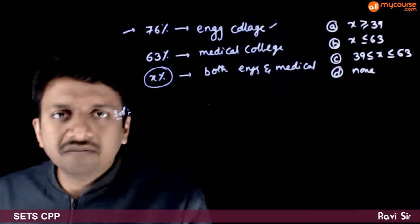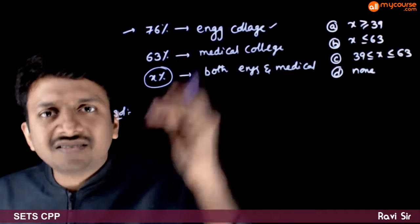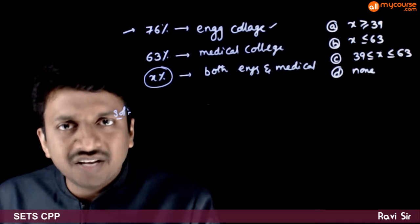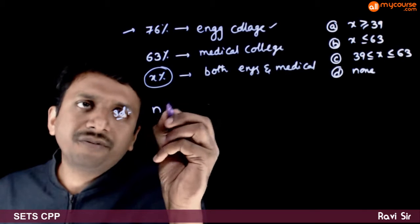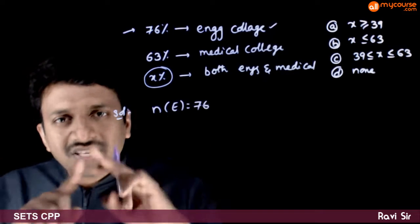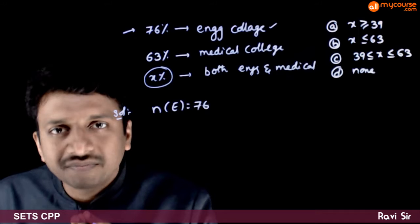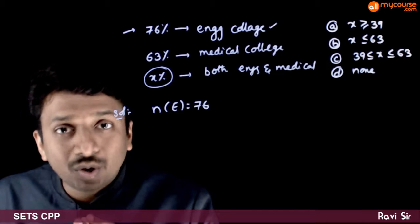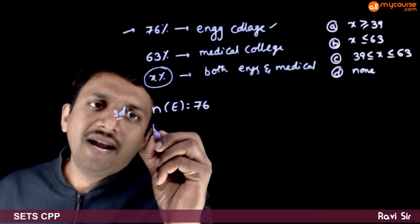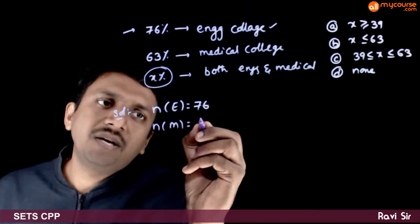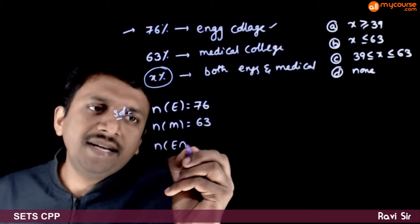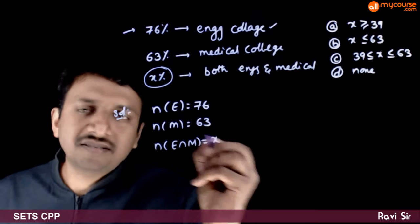In terms of sets, if E is the set of students likely to go to engineering colleges, then N(E) = 76. If we say there are a total of 100 students, then N(E) = 76, N(M) = 63, and N(E ∩ M) = X.